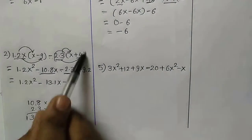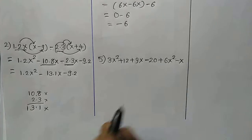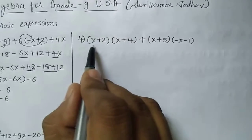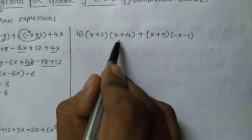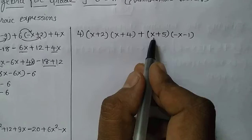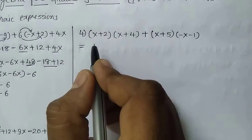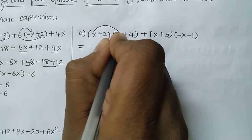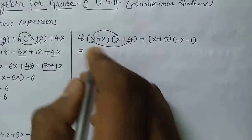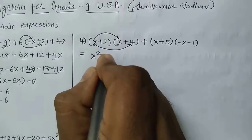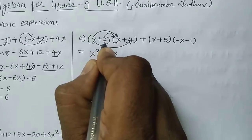So we can simplify this expression as 1.2x squared minus 13.1x minus 9.2. Now let's come to question number 4. The question is: bracket (x plus 2) multiplied by bracket (x plus 4), plus bracket (x plus 5) multiplied by bracket (minus x minus 1). To solve this we multiply the first term of the first bracket with each term of the second bracket: x times x is x squared, and x times 4 is plus 4x.